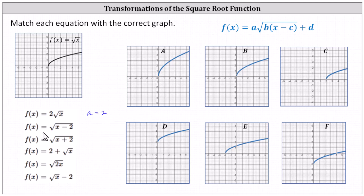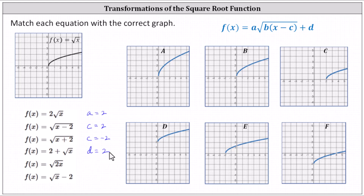For the second function, we have c equals positive two, which indicates a shift right two units. In comparison, for the third function, c is negative two, because x minus negative two does simplify to x plus two. This indicates a shift left two units. For the fourth function, even though we have two in the front, d equals positive two, which indicates a vertical shift up two units.